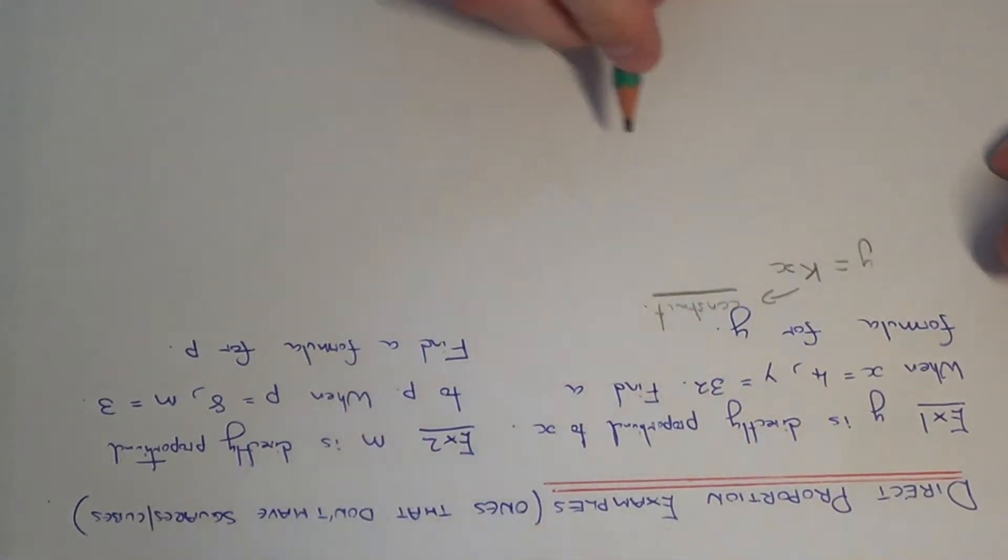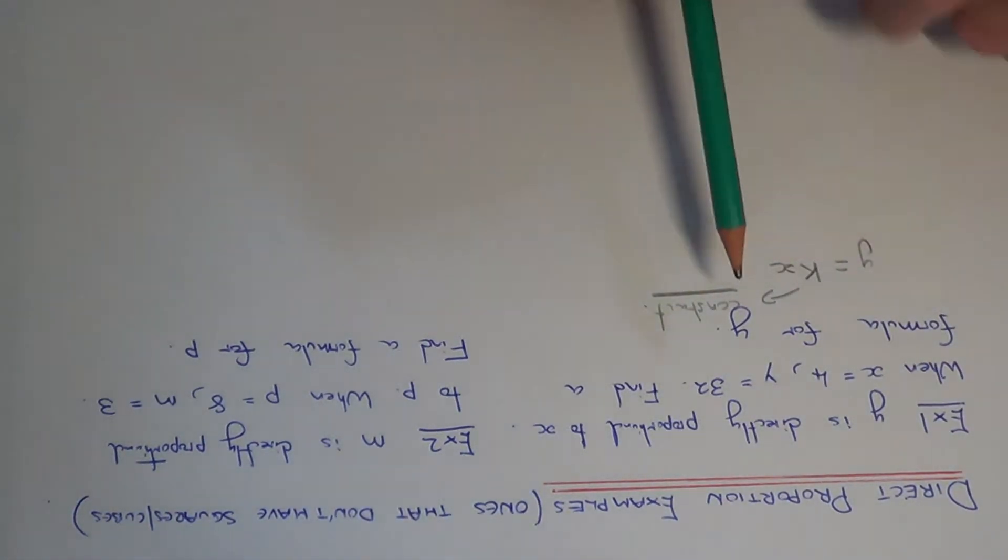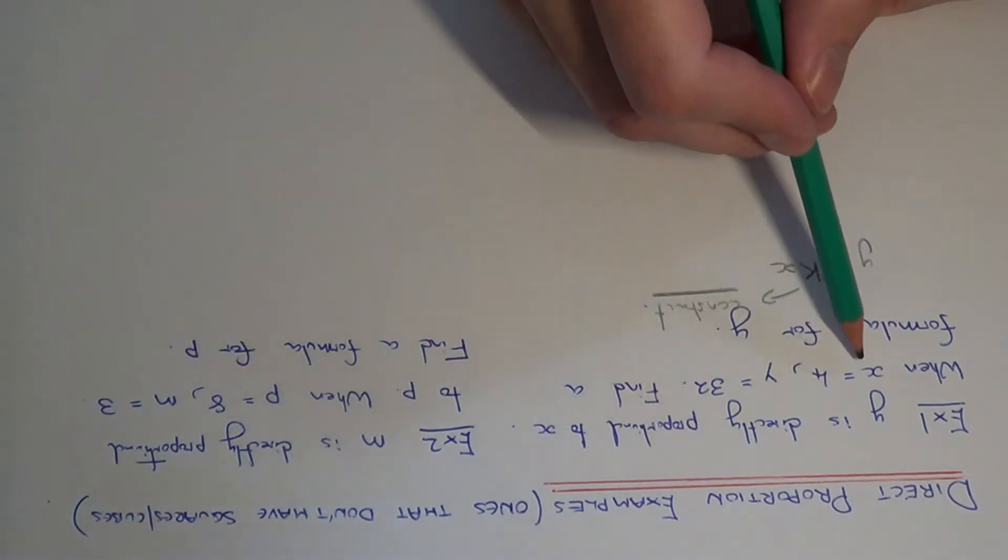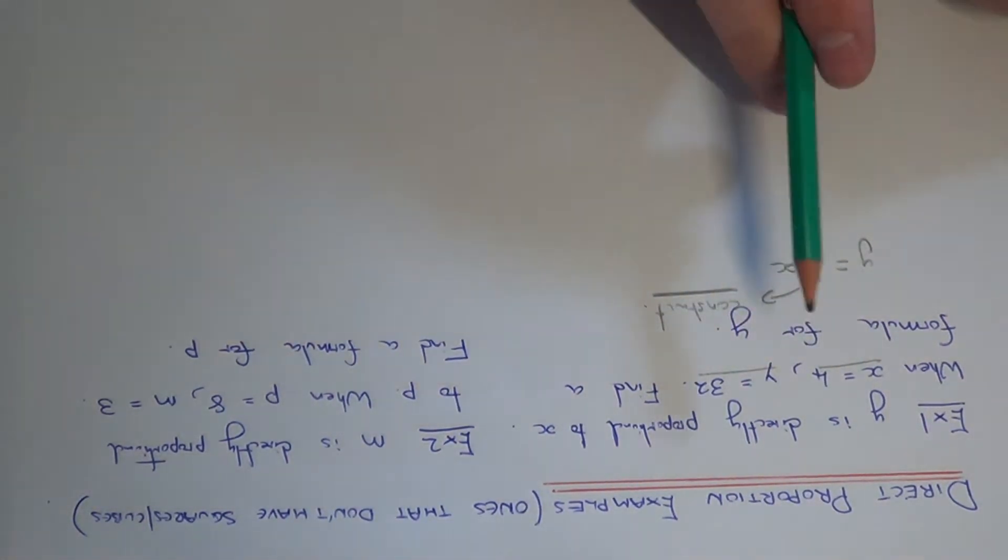And we need to work out what this constant is. And to get your constant, you can use the two numbers given in the question, these are called your boundary conditions, and you can use these to work out the value of k. And then you'll have your formula for y.